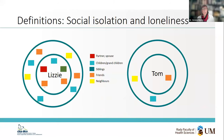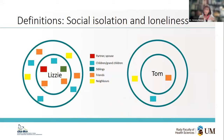Starting off with some definitions, just so we're all on the same page — what do I mean by social isolation and loneliness? Imagine we have two people: Lizzie and Tom. The circles around those two people reflect their social networks, and the squares within the circles are the people in those networks. People within the small circle are those the person sees a lot and feels close to; the outer circle contains other important people in their life.